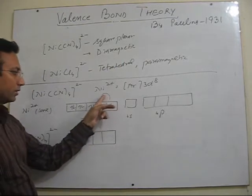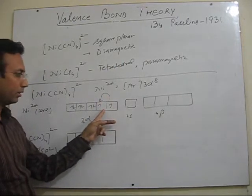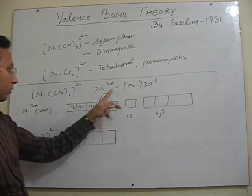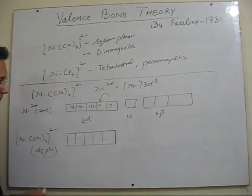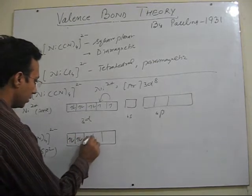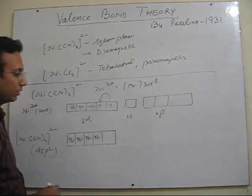So I have already told you there is a need of pairing here because we need one 3d orbital empty for the hybridization DSP2. As a result of pairing, you will see there is no unpaired electron left in 3d.